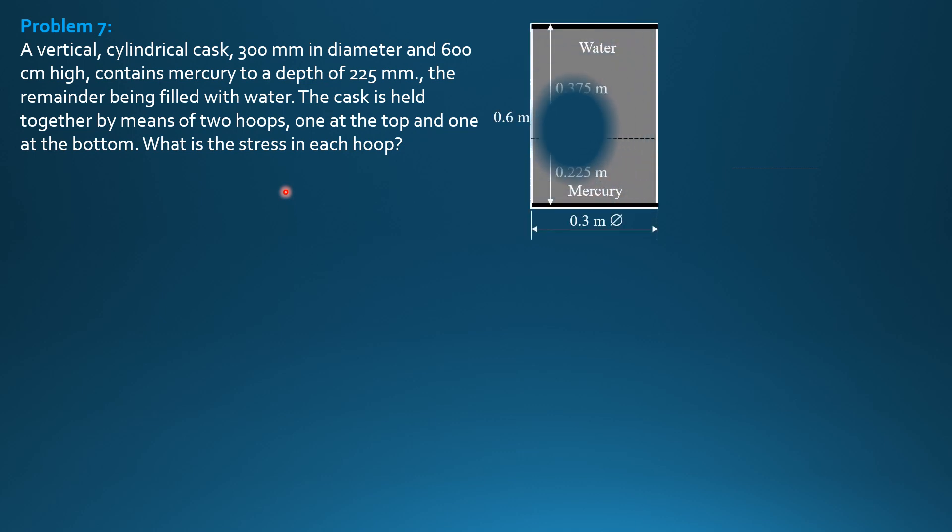So let's look at the figure. This is the cask, cylindrical cask, supported by hoops at top and bottom. And the lower is filled with mercury to a depth of 225 mm or 0.225 m, the remainder being filled with water.